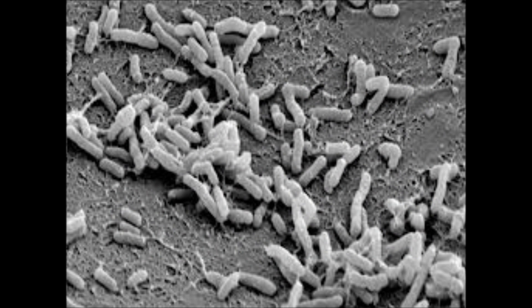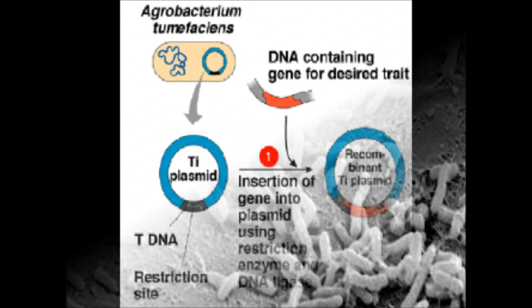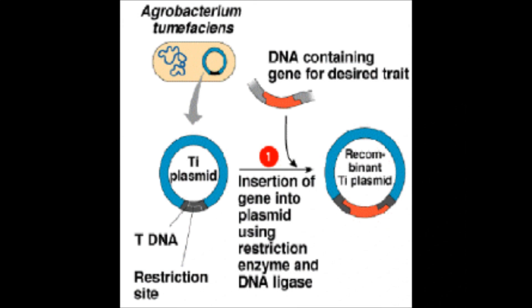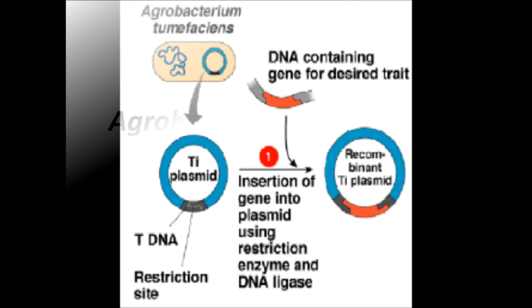Agrobacterium is one of the cloning vectors for higher plants. Agrobacterium-mediated transformation is the process of introducing new genes into plant cells by the usage of the Ti plasmid of Agrobacterium.